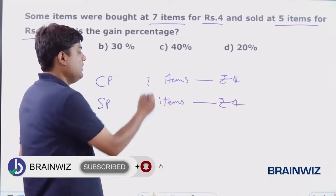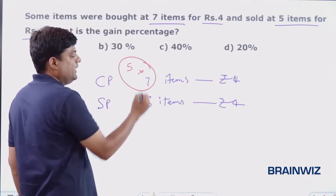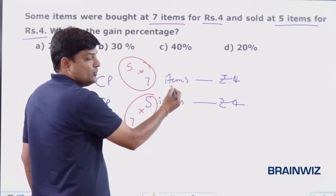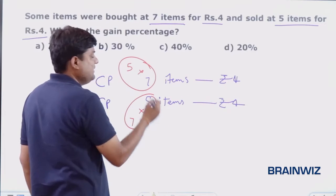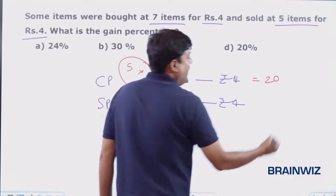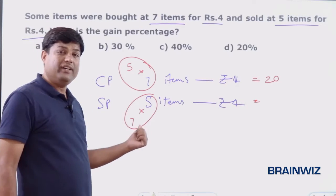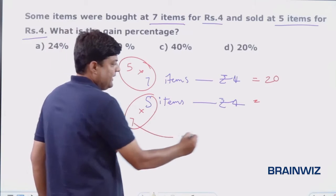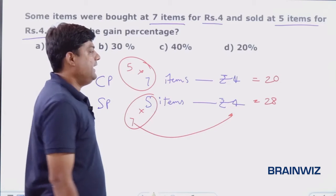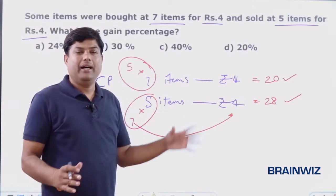So let's try to make these two equal. I am multiplying this by 5 and multiplying this by 7. When you see here, it will become 35 and 35. Now, 35 items — you know that 7 items you are purchasing at 4 rupees, so 35 items you need to multiply 5 into 4, that is rupees 20. And 5 items you are selling for rupees 4, so 35 items you are selling — 7 multiplied with 4 — that is 28 rupees. Now we can judge profit or loss because these two payments are for equal quantities.